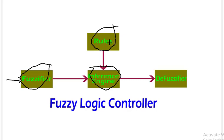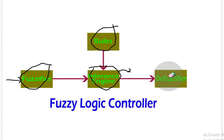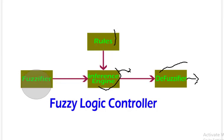We have a rule base with many possible rules. The inference engine determines which rules are fired and infers the appropriate output based on the rules and inputs. The output from the inference engine is a fuzzy output, so we have a defuzzifier, which converts the fuzzy values to a crisp output — because in the external world we need actual crisp values. This completes the simple fuzzy logic controller diagram.